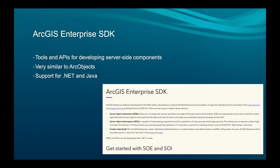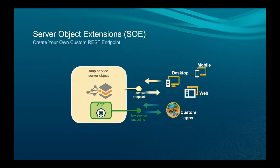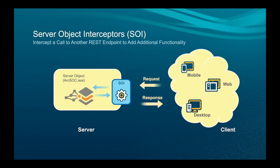The ArcGIS Enterprise SDK lets you build code that sits on the server side — it's very similar to the old Arc Objects, with support for .NET and Java. The two main kinds of extensions are server object extensions, which let you create a custom REST endpoint, and server object interceptors, which intercept calls to REST endpoints for pre- or post-processing before or after getting results back from the server.